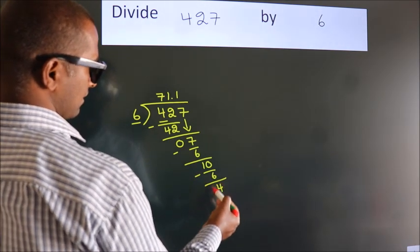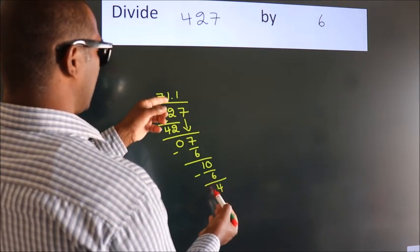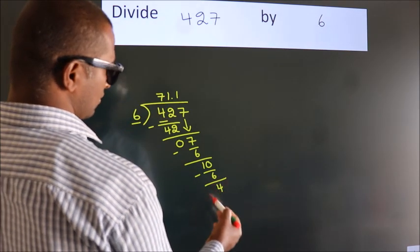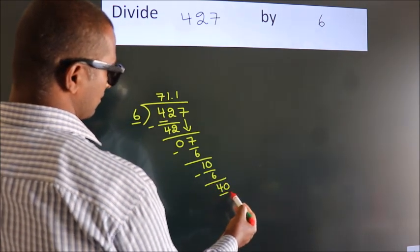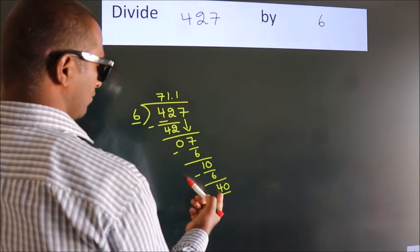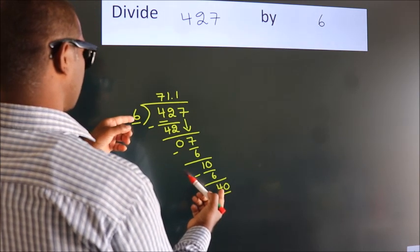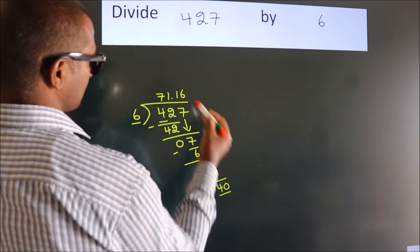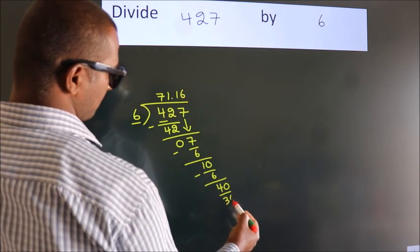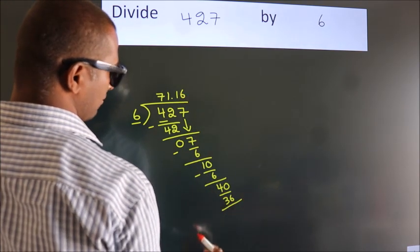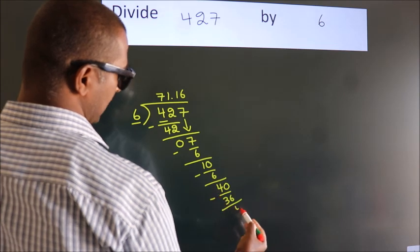After this, we already have the decimal. So directly take 0. So 40. A number close to 40 in 6 table is 6 times 6 is 36. Now we subtract. We get 4.